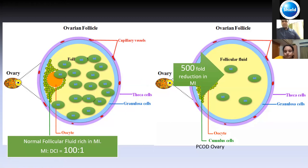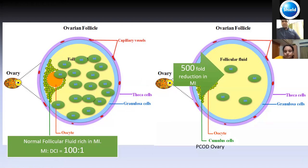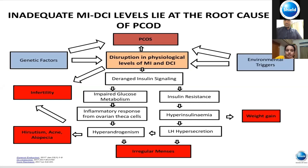A normal follicle contains myo-inositol at higher levels with a ratio of 100:1, but in PCOS the level comes down to as low as 0.4. This disruption of physiological levels of myo-inositol causes deranged insulin signaling, impaired glucose metabolism, hyperandrogenemia, insulin resistance, and irregular menses. Because of hyperandrogenemia, we see hirsutism, acne, and alopecia.